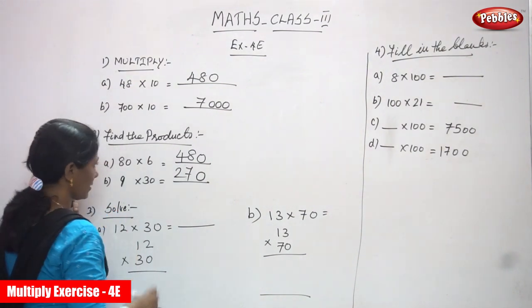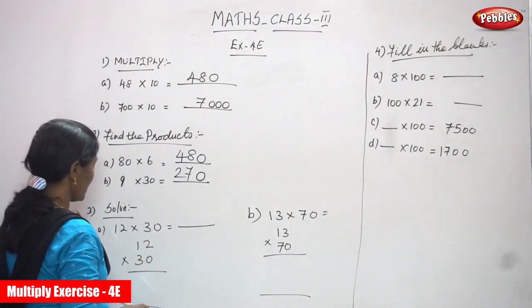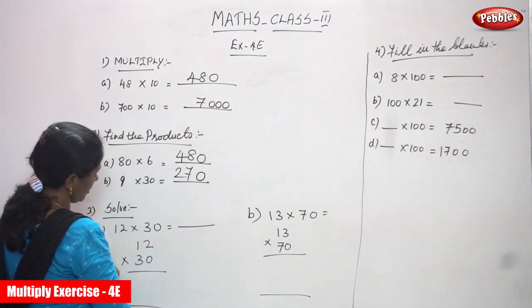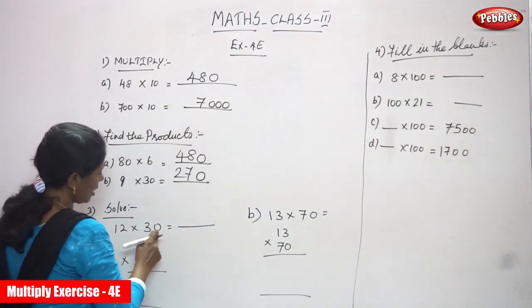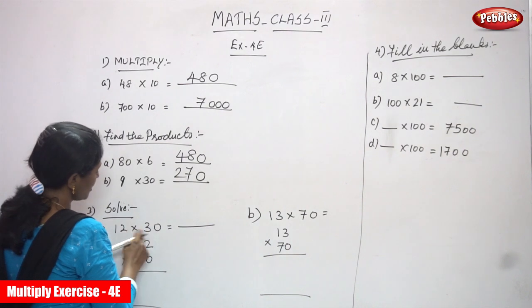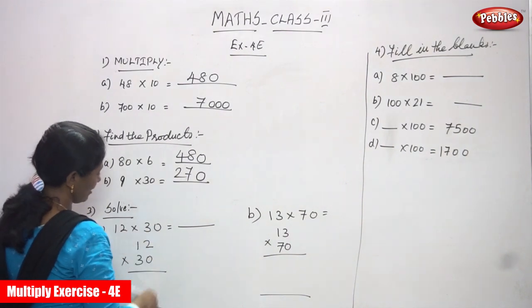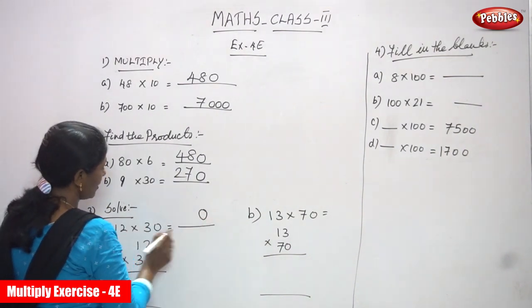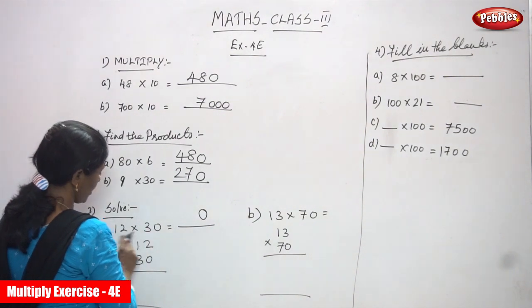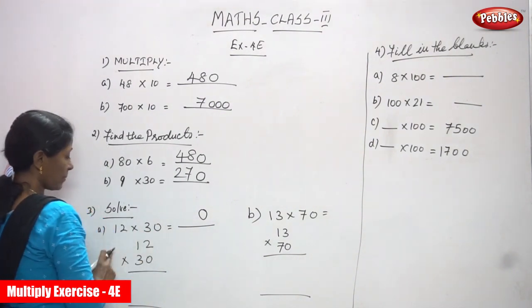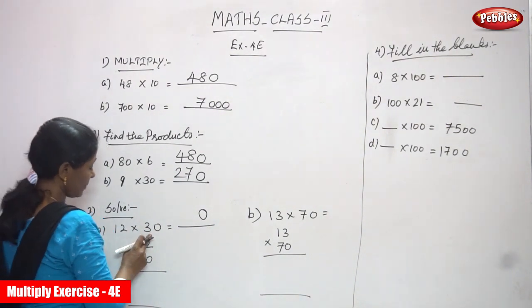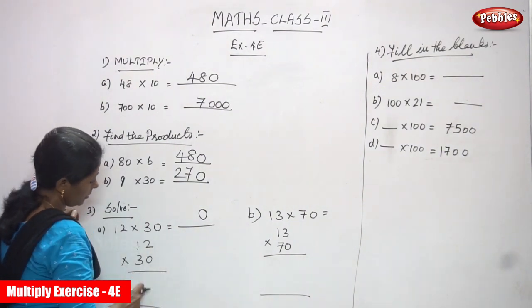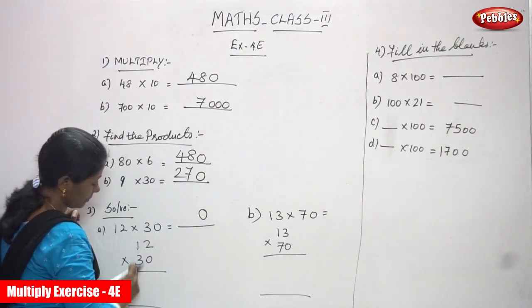Next, solve: I am going to multiply 12 into 30. 30 means 3 tens — how many zeros? Only one zero. So you must write only one zero at the end. Then you must multiply the remaining numbers, that means you must use the 3 table. Here I am going to multiply properly: the 0 in 30 is in the ones place, and the 3 is in the tens place.